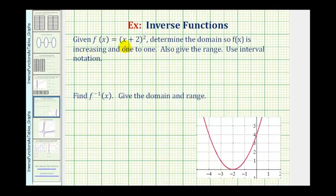Given f of x equals the quantity x plus two squared, we want to determine the domain so f of x is increasing and one-to-one. We also want to give the range and use interval notation.